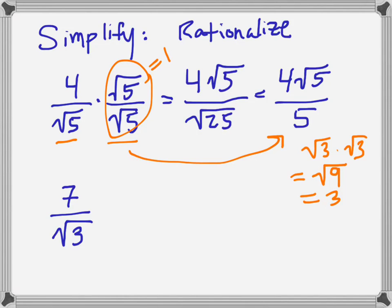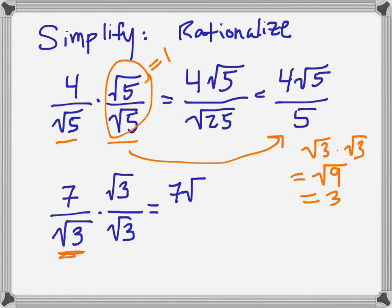How about 7 divided by the square root of 3? I can multiply this by 1 — I'll choose square root of 3 over square root of 3 — so that the denominator becomes a perfect square. You're choosing whatever the denominator is originally so it becomes a perfect square. In the numerator I get 7 square root of 3, and in the denominator I already know this is going to be a 3.